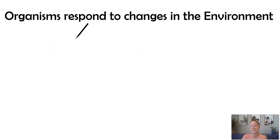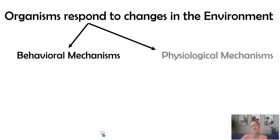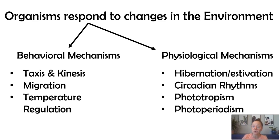When we look at different ways that organisms respond to changes in the environment, there are two main mechanisms: behavioral responses and physiological responses. Under the behavioral category, there's taxis and kinesis, migration, and temperature regulation. In the physiological category, we have hibernation, estivation, circadian rhythms — one of my favorites — as well as phototropism and photoperiodism in plants.